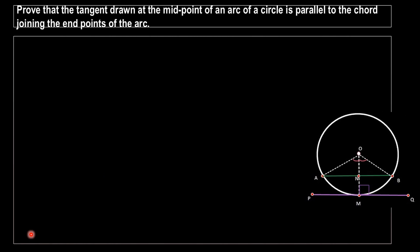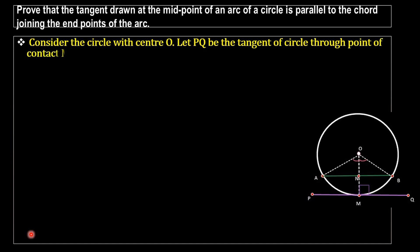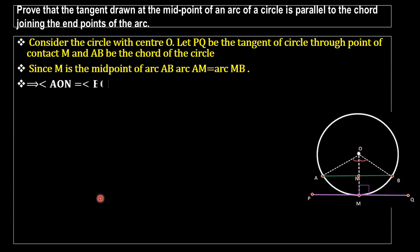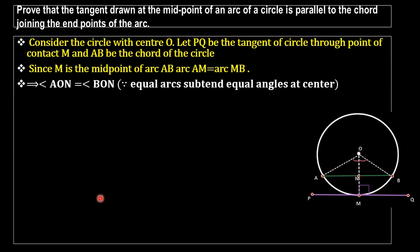Consider the circle with center O. Let PQ be the tangent to the circle through the point of contact M, and AB be the chord. Let M be the midpoint of arc AB. Then arc AM equals arc MB, since M is the midpoint. From this, angle AON equals angle BON, because equal arcs subtend equal angles at the center.